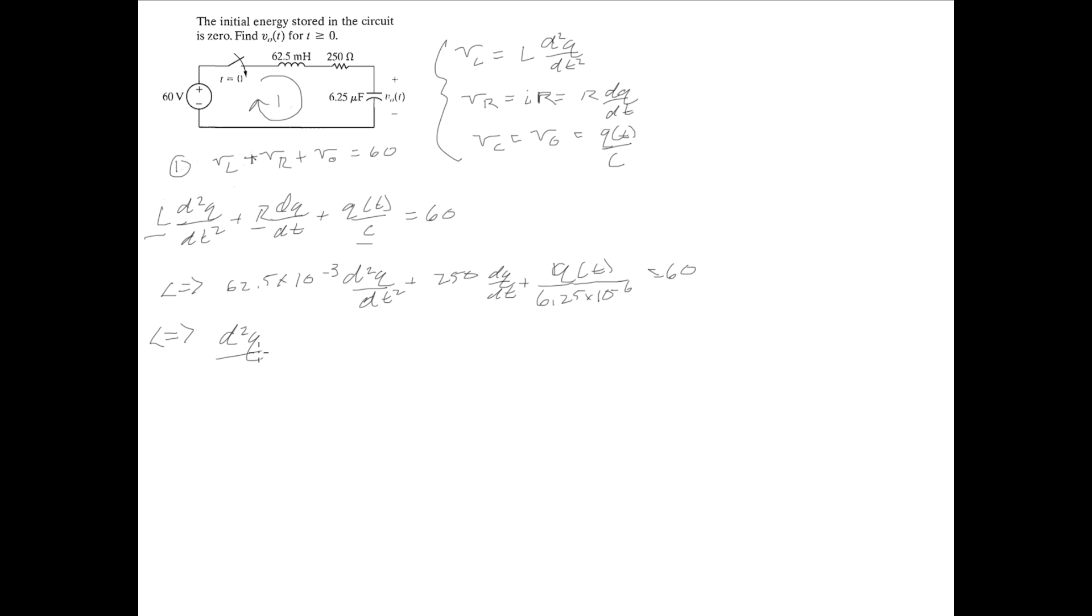you'll find that you'll get d²Q/dt² plus 4000 dQ/dt plus 2.56 times 10^6 Q(T) set that equal to 960. Here's our second order differential equation d²Q/dt² plus 4000 dQ/dt plus 2.56 times 10^6 Q(T) equals 960. This is the differential equation we've gotten from our one loop.